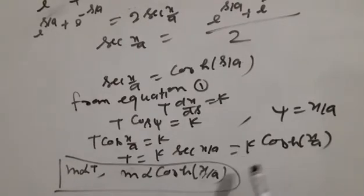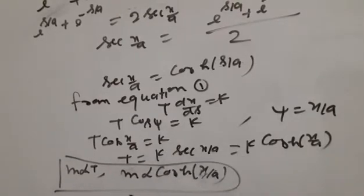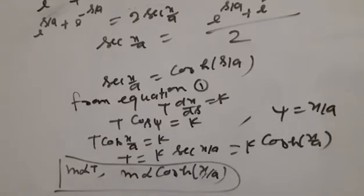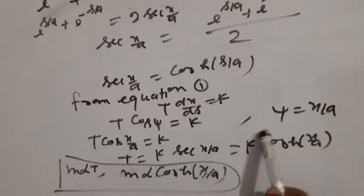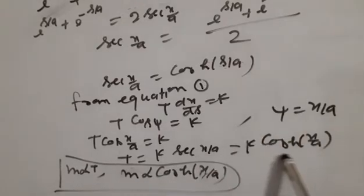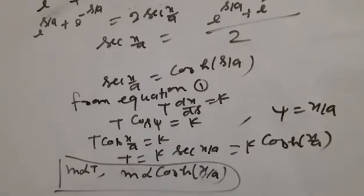M is proportional to T, and T is proportional to sec(x/a), which equals cosh(s/a). Therefore M is proportional to the hyperbolic cosine (cosh). This is what we set out to prove.